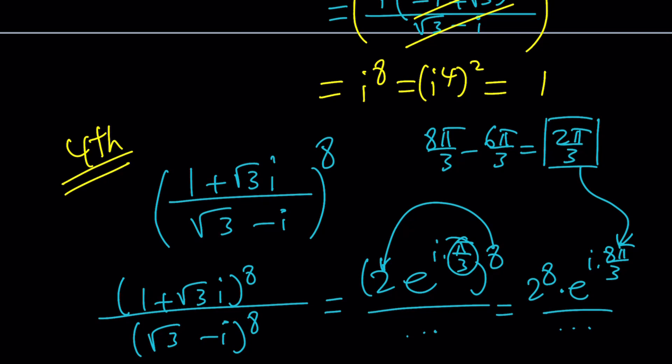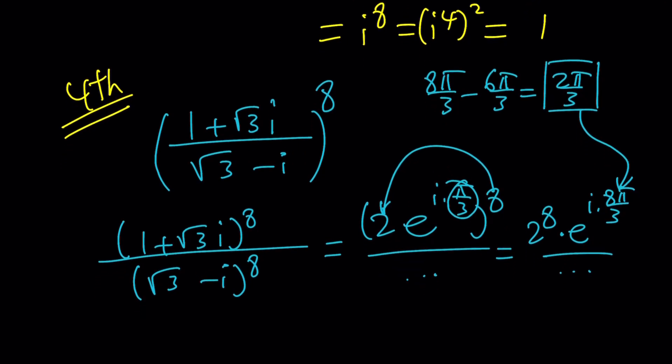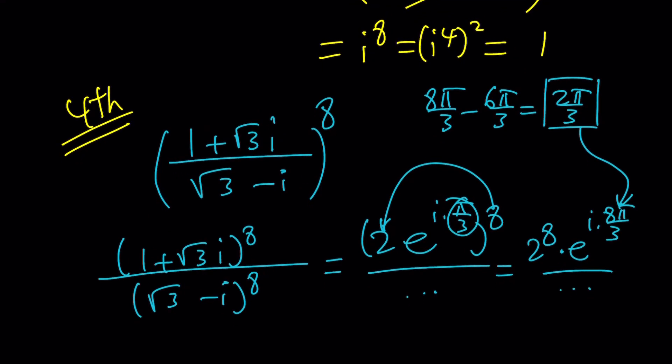And you should be able to get the exact same answer. But again, this is a longer way to do it. But I still wanted to show you real quick. The longest way probably would be just using the binomial theorem, which is probably something that you would never do. But if you raise a + b to the eighth power by using the binomial theorem, then you should get the same answer.